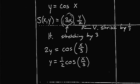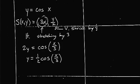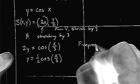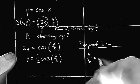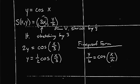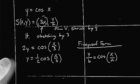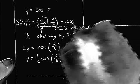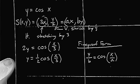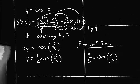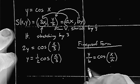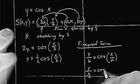There is an alternative way of looking at it. You might hear some teachers refer to something called fireproof form. In this case, it looks like this: y over b equals cosine of x over a. We haven't included any translations yet. In this particular example, a is 3, and b is 1 half — since dividing by 2 is the same as multiplying by 1 half. So one way to look at this is: y divided by 1 half equals cosine of x over 3.